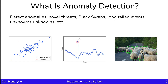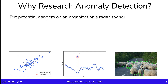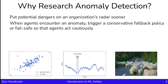For example, we might try to detect an intruder. In a time series, we might try to detect an unusual sequence of events. And in the case of autonomous driving, we might try to detect if there are objects on the road that we've never encountered before and don't yet know how to handle. One motivation for doing anomaly detection research is to put potential dangers on an organization's radar sooner rather than later. Another reason is that when agents encounter an anomaly, they can trigger a conservative fallback policy or a fail-safe so that agents act cautiously.